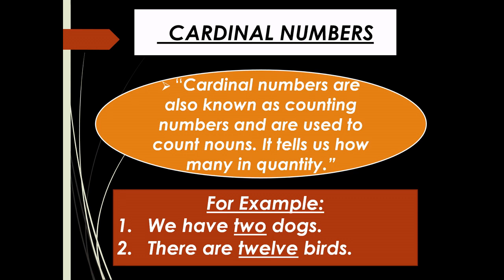Second example for cardinal numbers: 'There are 12 birds.' Here 'birds' is the noun and '12' is the cardinal number, showing the quantity of the noun.